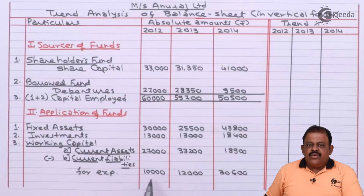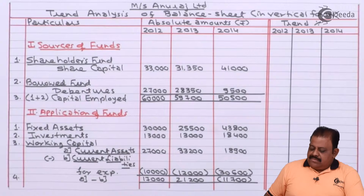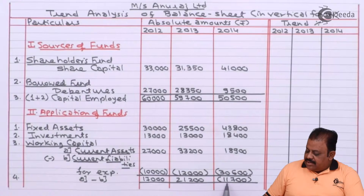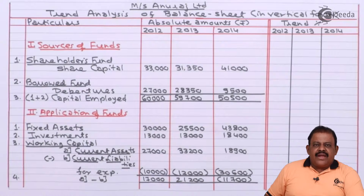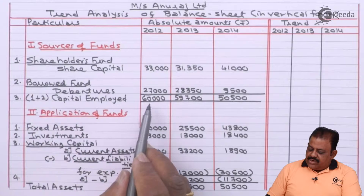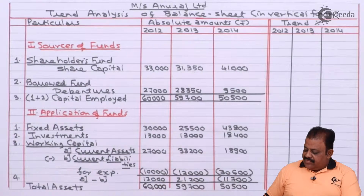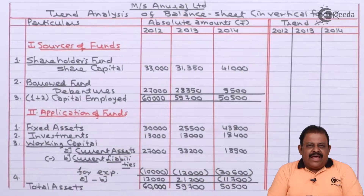From current assets we deduct current liabilities to get net working capital: 17,000 in 2012, 21,200 in 2013, and negative 11,700 in 2014. Adding fixed assets, investments, and working capital gives total capital employed: 60,000, 59,700, and 50,500 respectively — so the vertical balance sheet tallies.